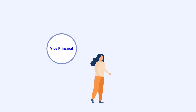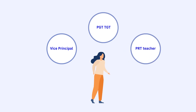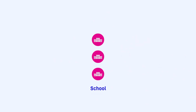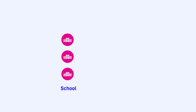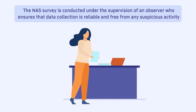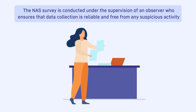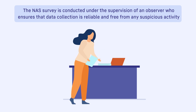An Observer is a Vice Principal, PGT, TGT or PRT teacher from a local school in the district, as nominated by the district level coordinator. Each school selected for the NAS survey is assigned one external observer by the district level coordinator as per CBSE orders. The NAS survey is conducted under the supervision of an observer who ensures that data collection is reliable and free from any suspicious activity.